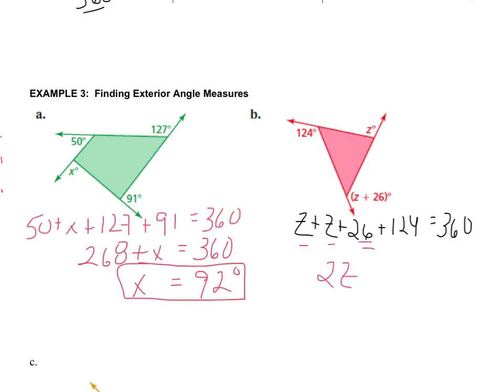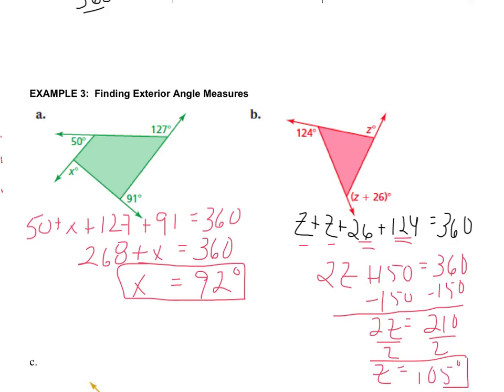I would follow through by subtracting 150. So, 2Z equals 210. We would divide by 2. Z equals 105 degrees.